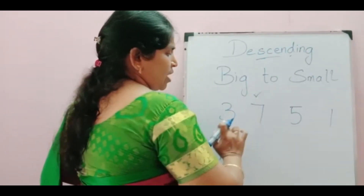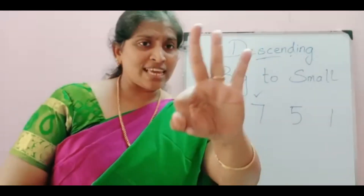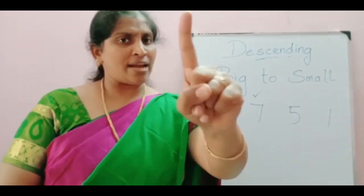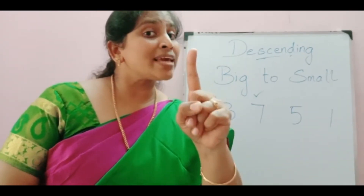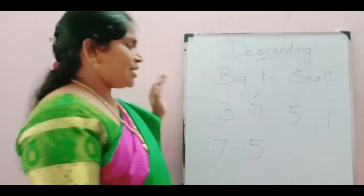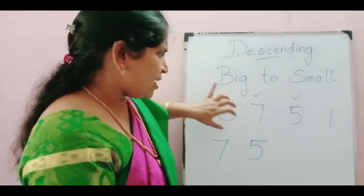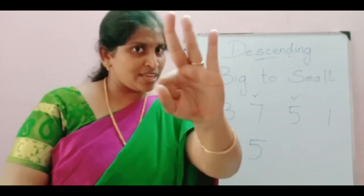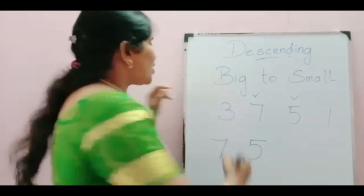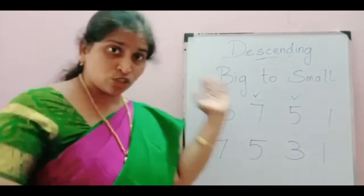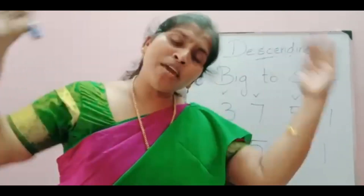Now don't look at 7. See these three numbers: 3, 5, 1. Which is the biggest? Good — 5. Write 5. Next, look at the remaining numbers: 3 and 1. Which is bigger? Good — 3. Write 3. The last one left is 1, so write 1. This is big to small — big to small means descending, and small to big means ascending.